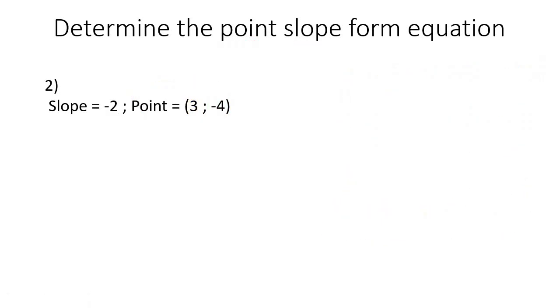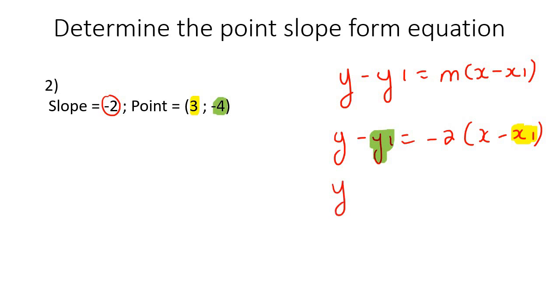Here's our next example. So we know now that point-slope form goes like this. The slope is negative 2, so we'll fill that in over there. And then with the point, that is an x value, so it's over there. And then that over there is a y value. So we go fill it in.